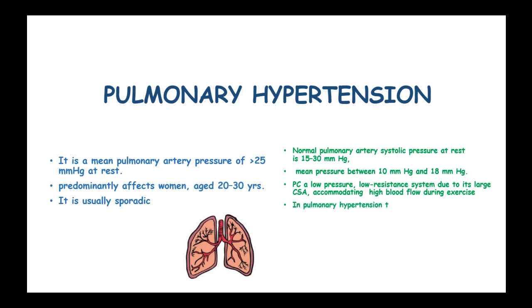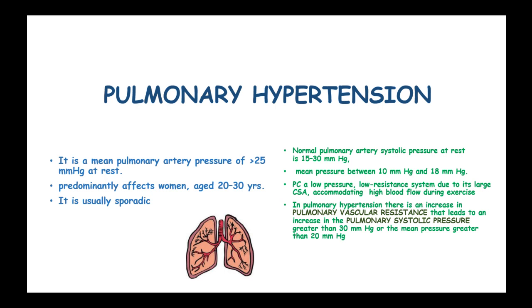In pulmonary hypertension, there is an increase in pulmonary vascular resistance which leads to an increase in the pulmonary systolic pressure to more than 30 mm Hg or a mean pressure greater than 20 mm Hg. When a patient has a mean pressure of more than 20 or 25 mm Hg, you diagnose pulmonary hypertension.